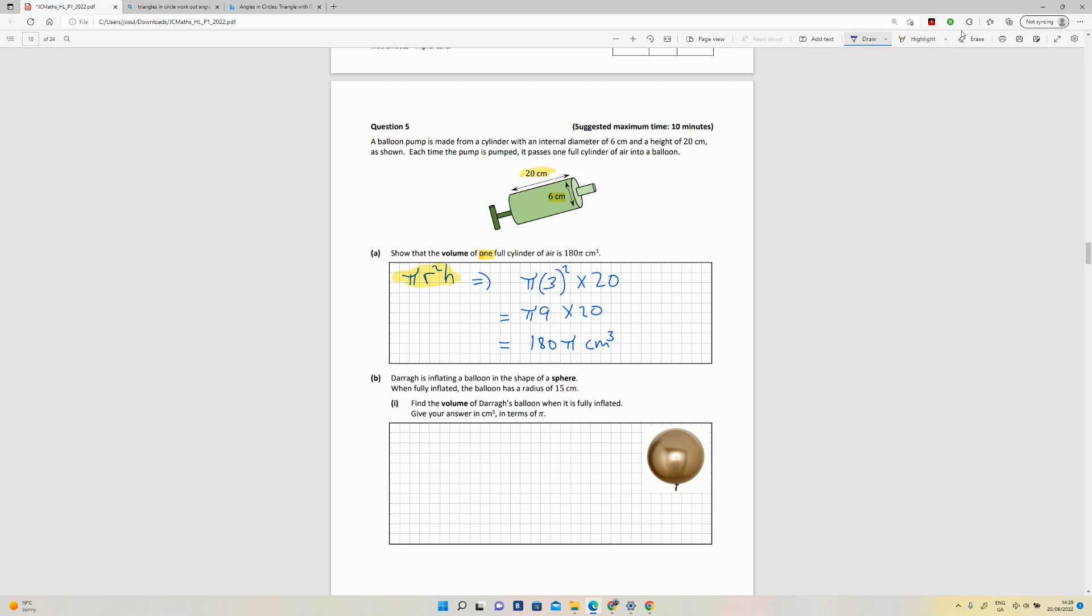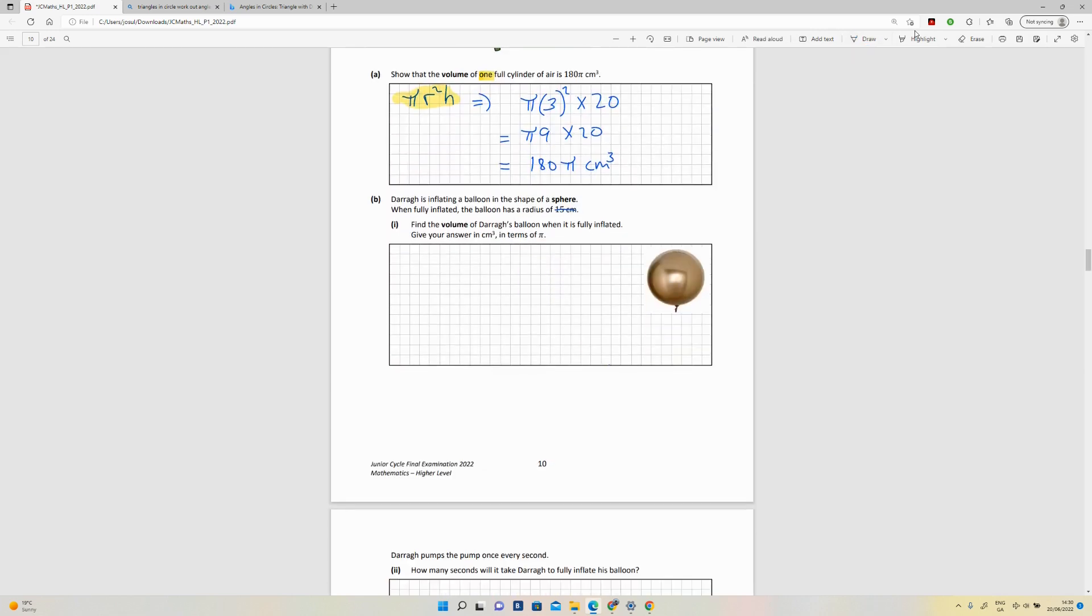Part B. Dara is inflating a balloon in the shape of a sphere. When fully inflated, the balloon has a radius of 15. Find the volume of Dara's balloon when it's fully inflated. Give your answer in centimeters cubed in terms of π. So again, we're looking for volume, and there's a volume of sphere formula.